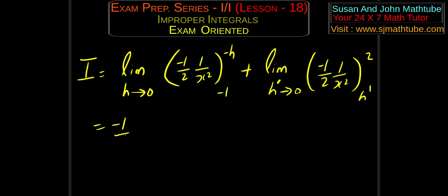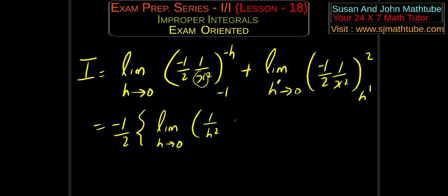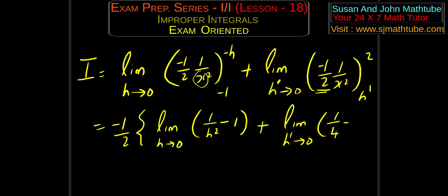So this minus 1 by 2 comes outside, and limit h tends to 0. When you plug in minus h, you are going to get 1 by h square, and minus 1 by 1 itself, because when you square this it will be positive. And then minus 1 by 4 minus 1 by h prime square. Now it's clear that this is going to be infinity — so no way, this is not going to exist. So you can write: the general solution does not exist.